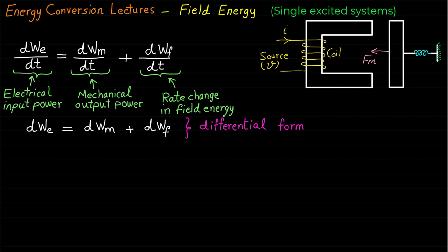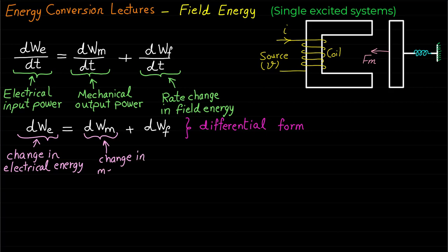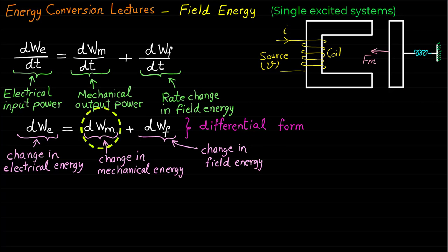This equation shows that a small increment or change in the input electrical energy is equal to a small change in mechanical energy plus the rate of change in the field energy or increase in stored energy. The mechanical energy, or the change in mechanical energy, represents the important output energy that goes to the load and produces the movement.